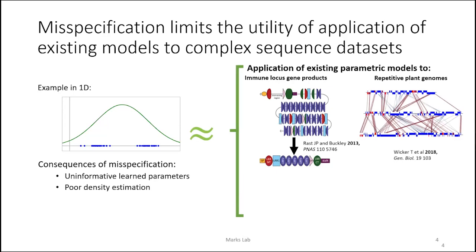Biological sequence datasets are incredibly complicated. To avoid the extremely complicated examples like cancer, here are two common ones: immunologous gene products such as antibodies undergo really complicated recombination and rearrangement. Also, the ensemble of Arabidopsis genomes is super variable and undergoes complicated structural rearrangements involving transposons, deletions, and rearrangements — and this is in normal Arabidopsis.